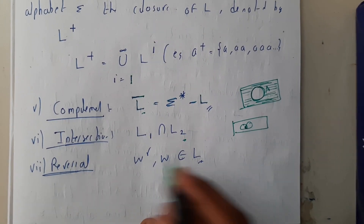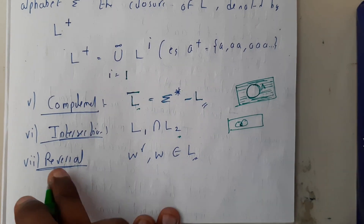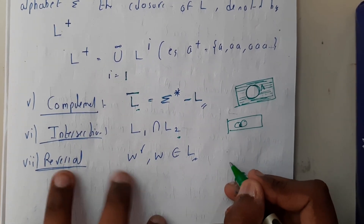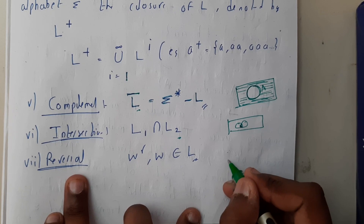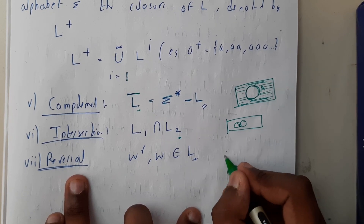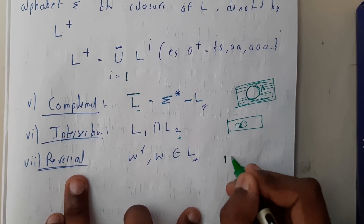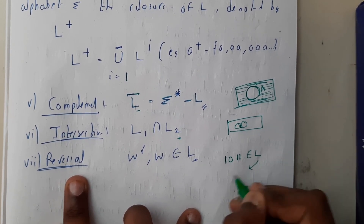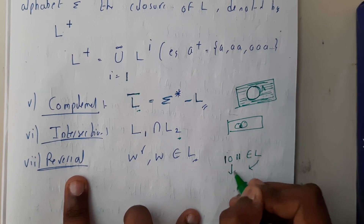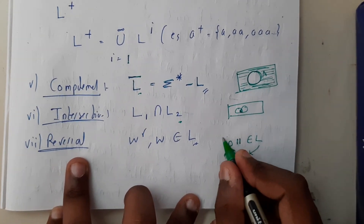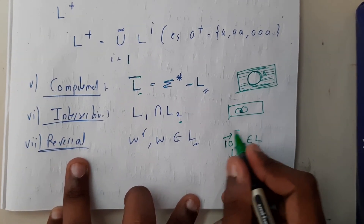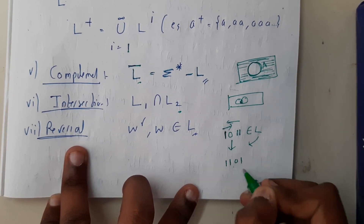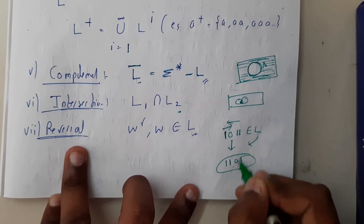Intersection is the common part between two languages. Reversal is also important to learn. Reversal means if a word like 1011 belongs to a language, then its reversal is 1101 — you simply read it from the other side.